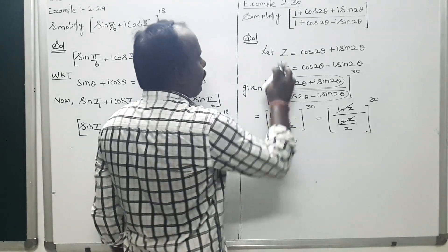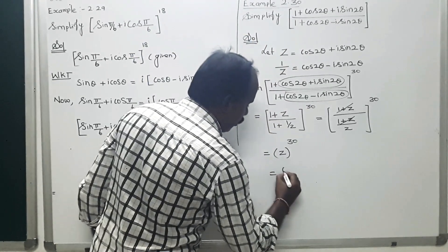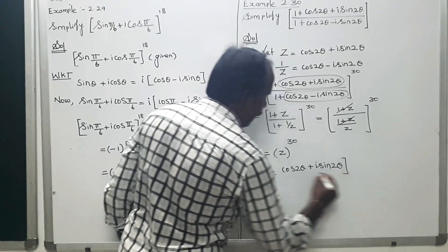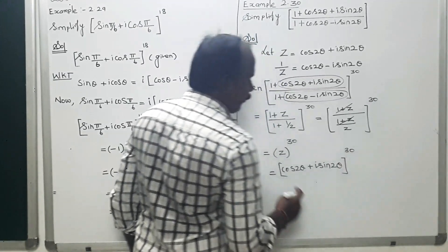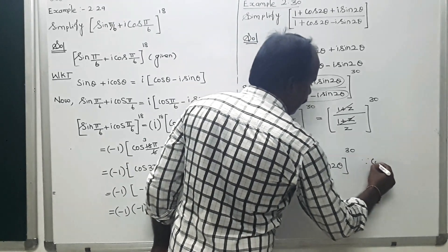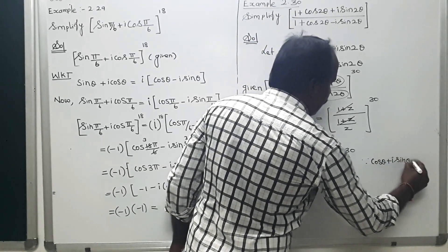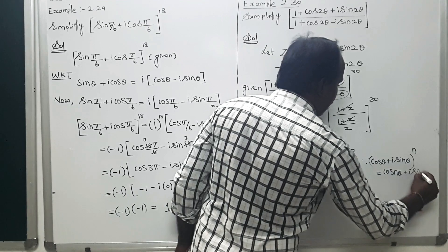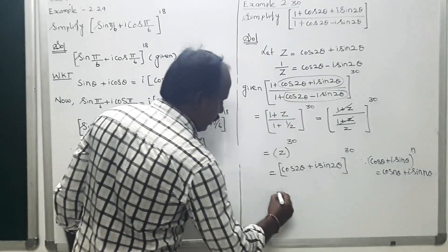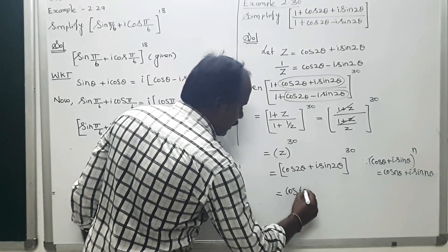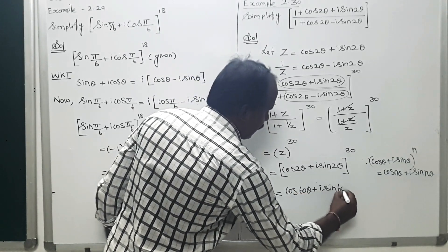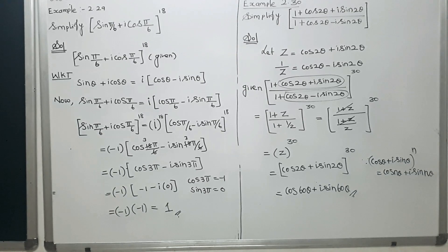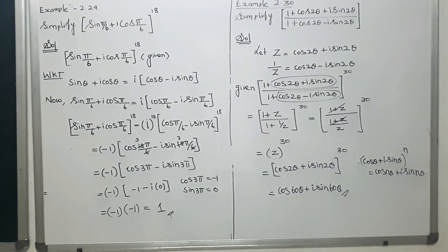Replacing z with cos 2θ + i sin 2θ and applying De Moivre's theorem: (cos 2θ + i sin 2θ)^30 = cos 60θ + i sin 60θ. That is the final result.